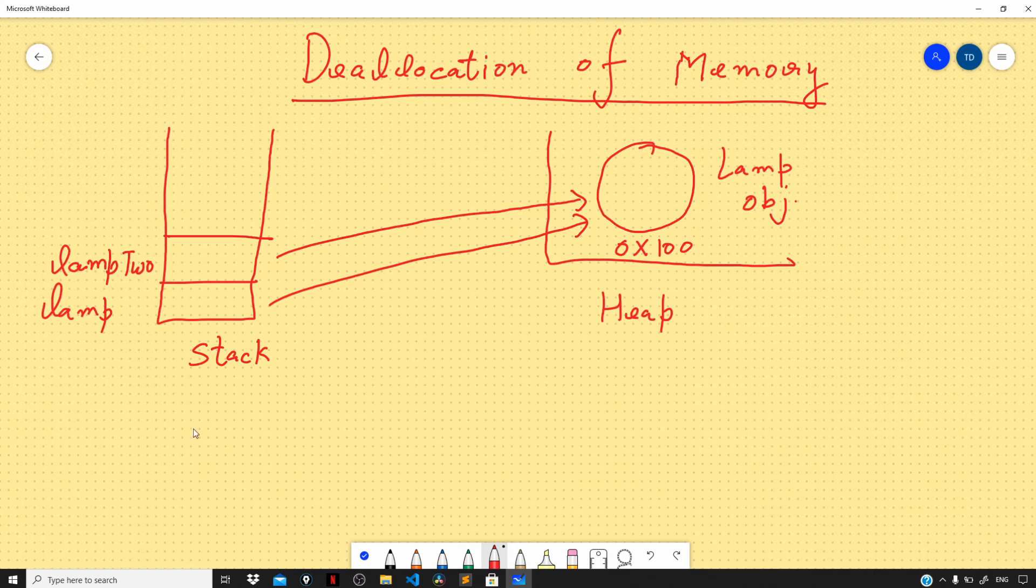Now here we don't have to manually deallocate the memory that we allocated. Java will automatically take care of that. The concept behind this is that when we are done with a method, the Java runtime will immediately remove all the variables that are stored on the stack. So here in our code, once we are done executing the main function, both the lamp and lamp2 references will get immediately removed from the stack.